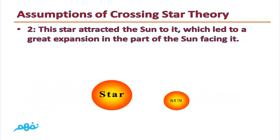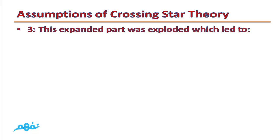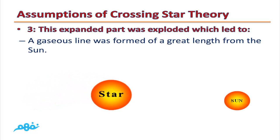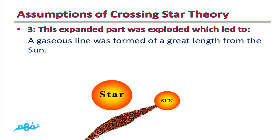This star attracted the sun to it, which led to a great expansion in the part of the sun facing it. This expanded part was exploded, which led to a gaseous line was formed for a great length from the sun.